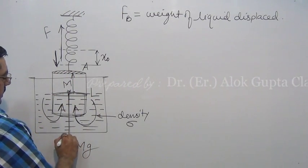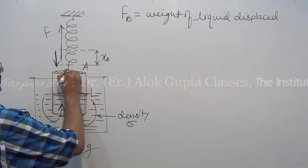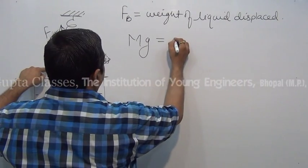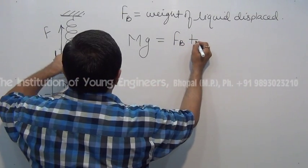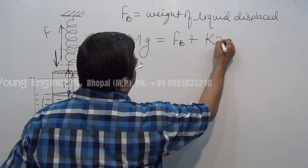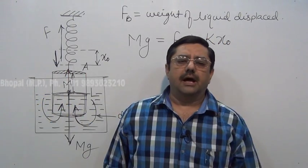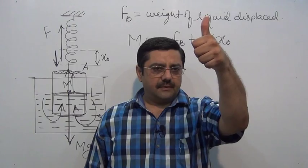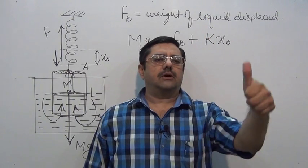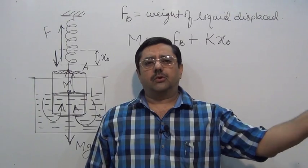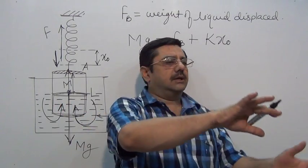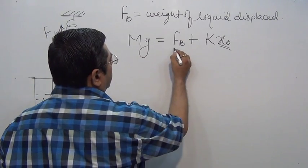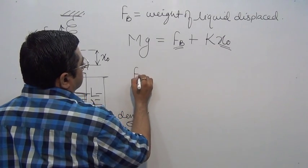Now what is the situation? Mg acting downward, buoyant force acting upward. So Mg is equal to buoyant force plus that is F is equal to K times X naught. Magnitude if we equate - direction we already took that this is downward and this is upward. Otherwise, Mg minus K X naught minus F_b is equal to zero because it is in equilibrium. Here I have directly equated. From here X naught has to be found.